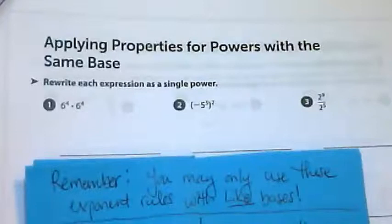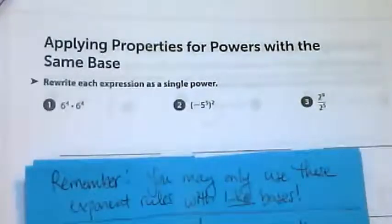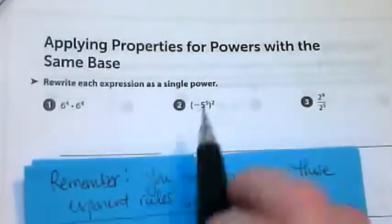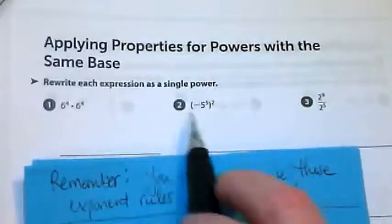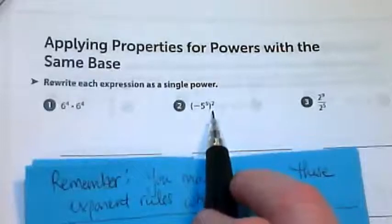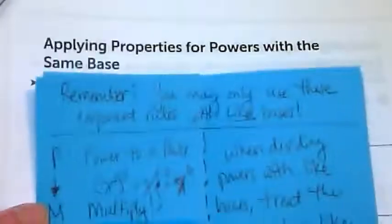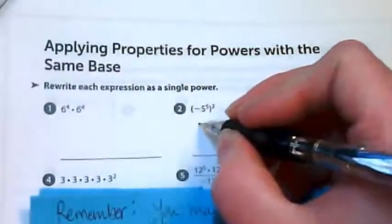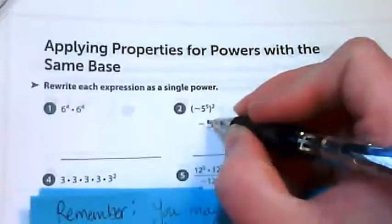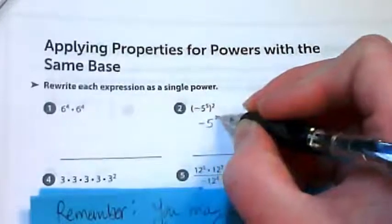When I look at what we have here, a power to a power is like this one here because we have this negative 5^5 raised to a power. And what we do with a power to the power is we multiply. We multiply the exponent. So this is going to become negative five raised to the tenth power.